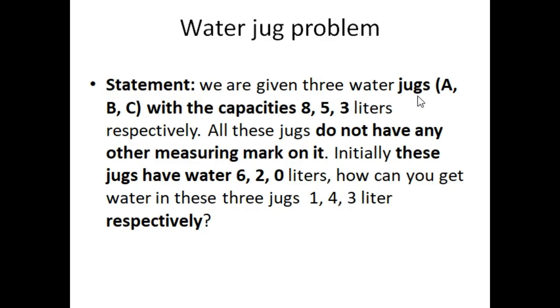The statement is: we are given three water jugs. So the water jugs are A, B, C. We can represent the three water jugs in the form of symbols with the capacities of 8, 5, 3 liters respectively. So it means jug A has the capacity of 8 liters and jug B has the capacity of 5 liters.